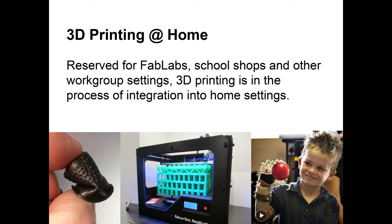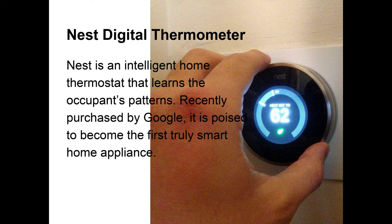Another trending item is the Nest digital thermostat. This is a thermostat that learns your patterns — when you're home, when you're gone, and how hot or cold you want it — and adjusts temperatures accordingly. This company was recently purchased by Google for several billion dollars, showing they really think this category is going to take off.